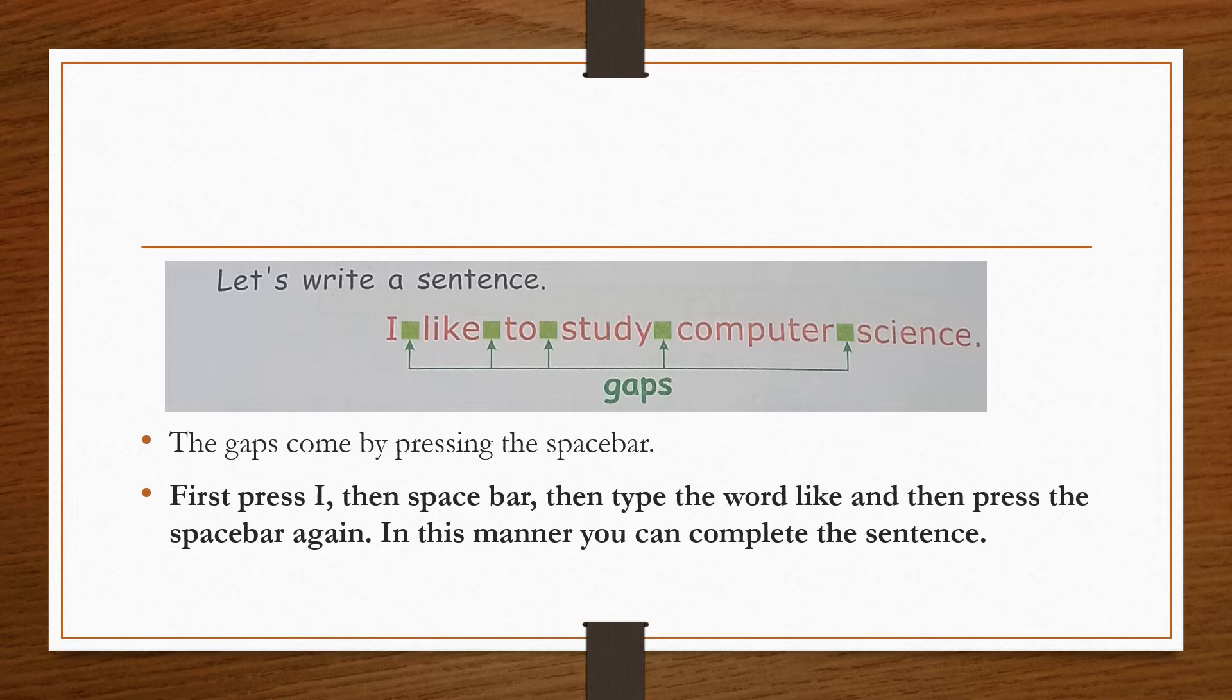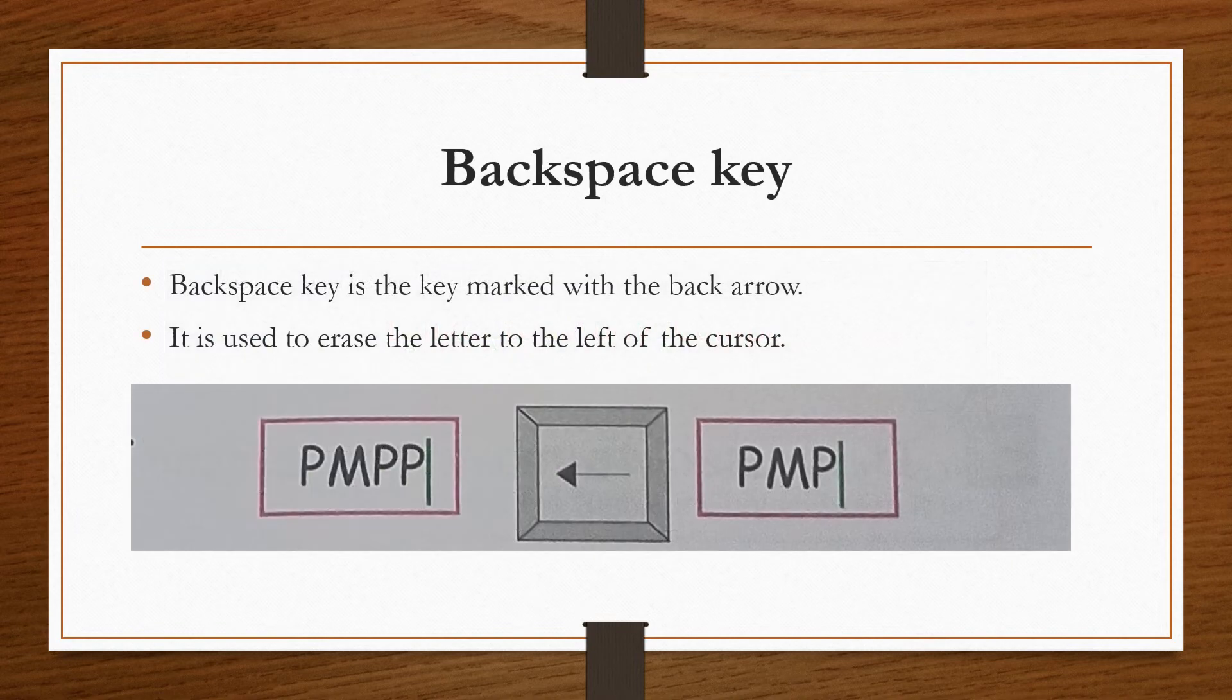How? Now let's check it out. First of all, what we have to do is first press I, after that we have to press space bar, then type the word like, then press the space bar again, then write to, then press the space bar again. So in the same way we'll continue this to complete the sentence.